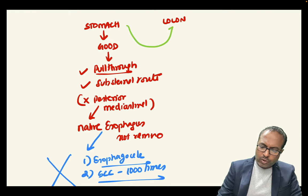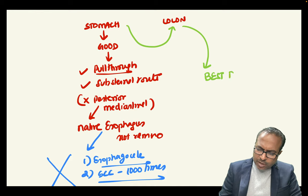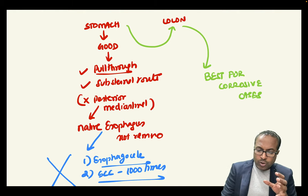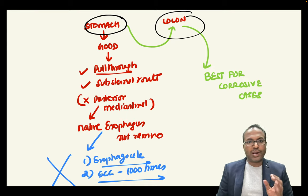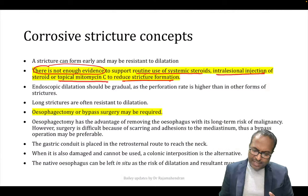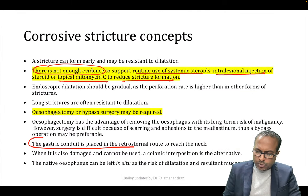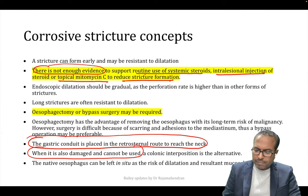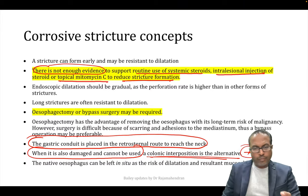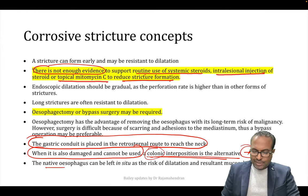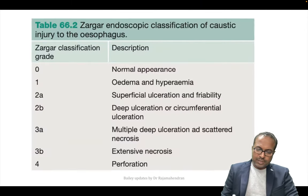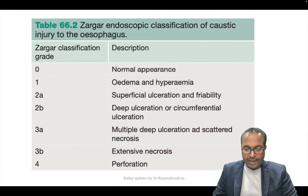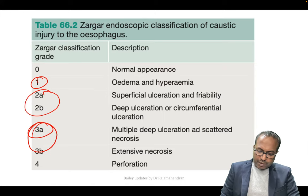Native esophagus can be left in situ — the risk of developing squamous cell cancer (though 1000 times increased) is very low in absolute terms. No surgeon now removes the native esophagus. Zargar's classification from Bailey: erythema, ulceration, necrosis, perforation. Gastric conduit placed retrosternally to reach the neck; colonic interposition is the alternate when stomach is unavailable.